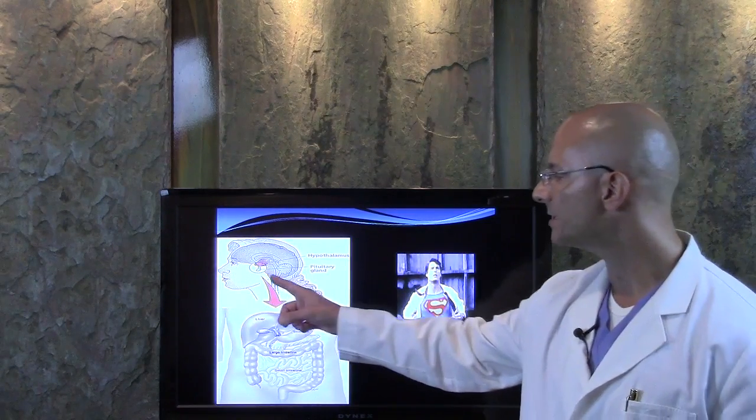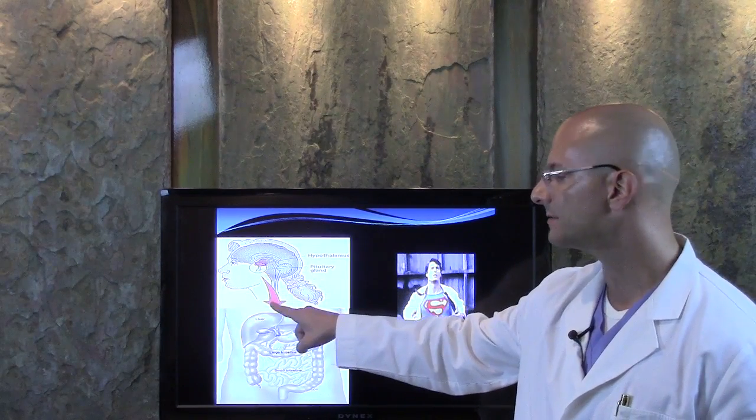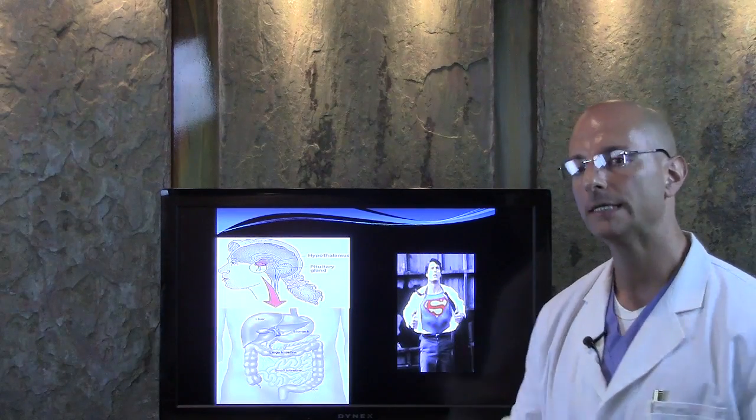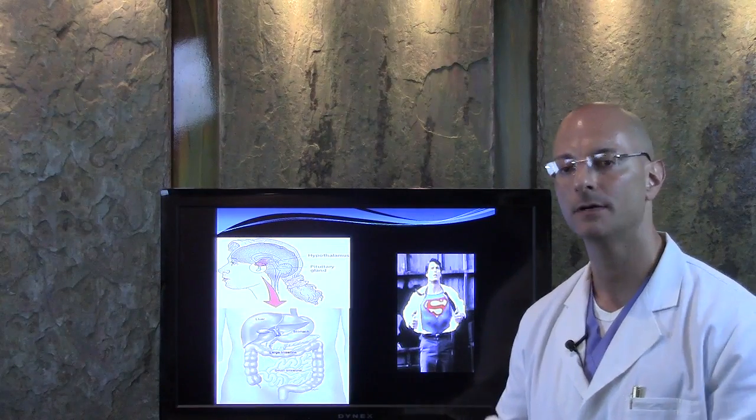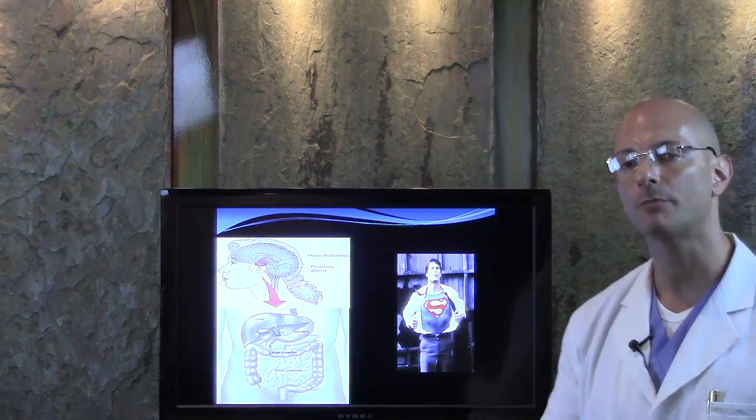Now over here in this picture, you see there's a pituitary gland in the brain, and that sends a signal down to your thyroid. Your thyroid produces a hormone called T4. T4 has to then travel, it jumps in a taxi cab, and it goes into the liver, and your liver has to be working properly.